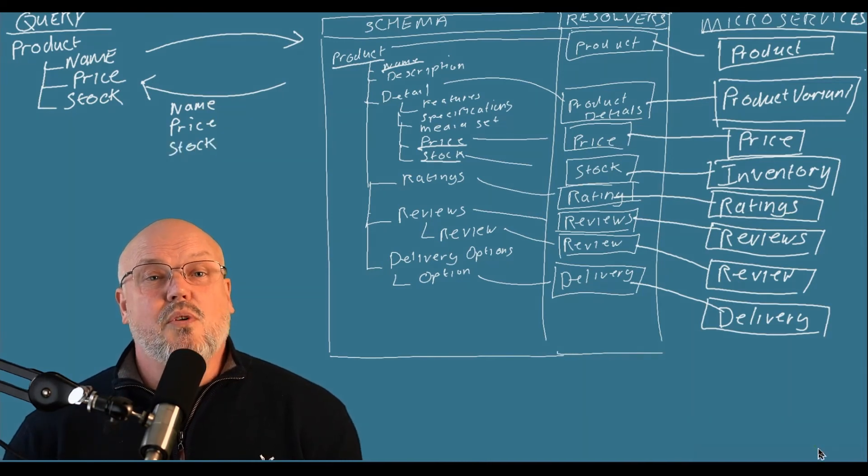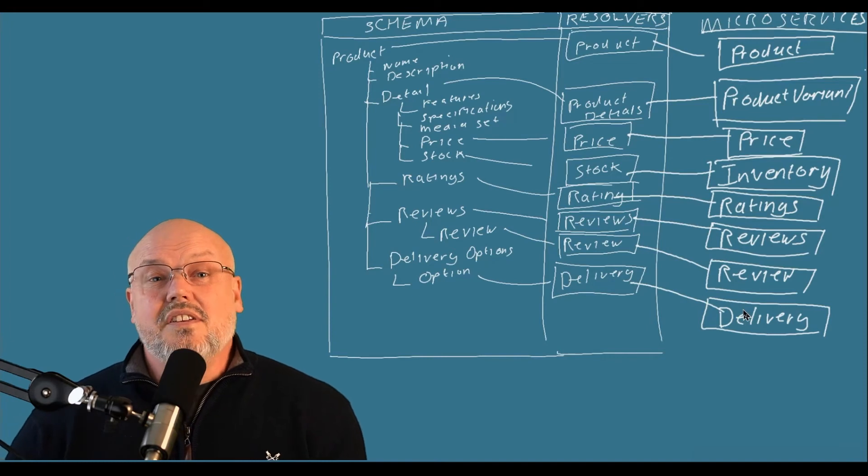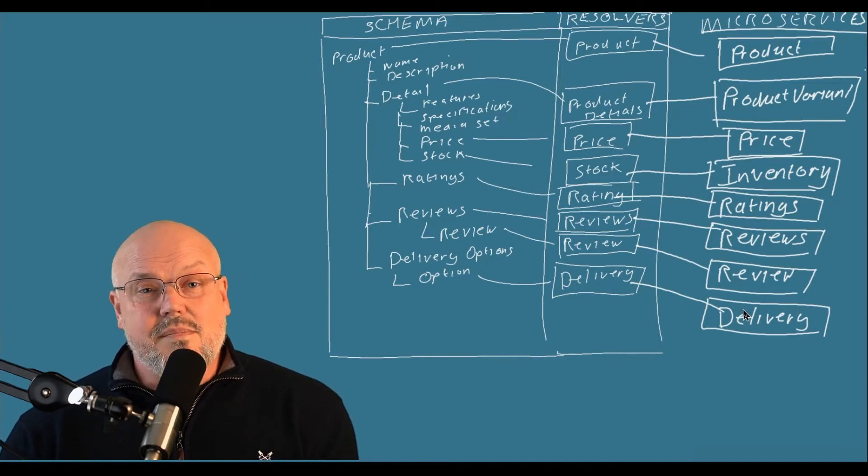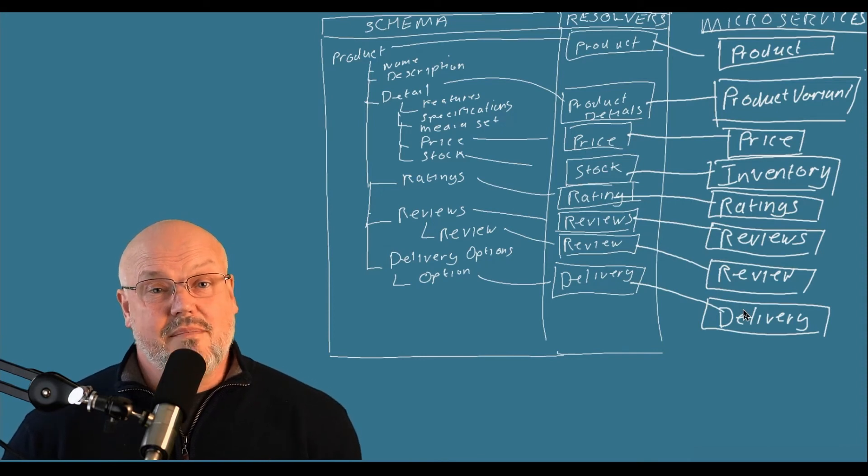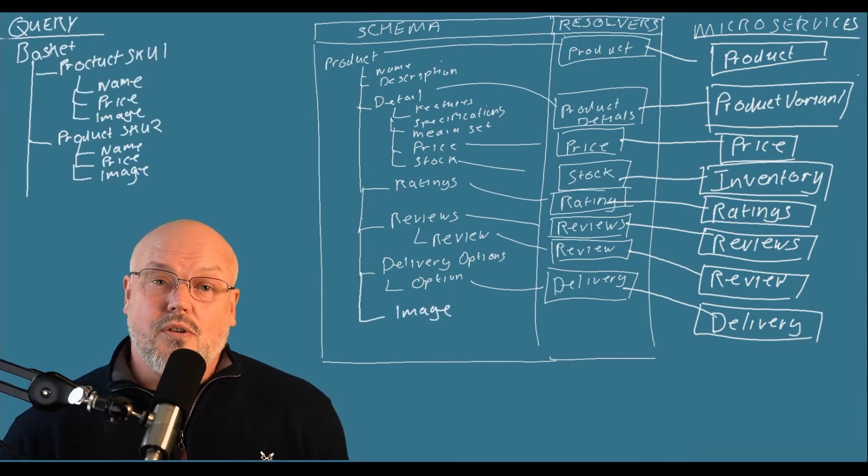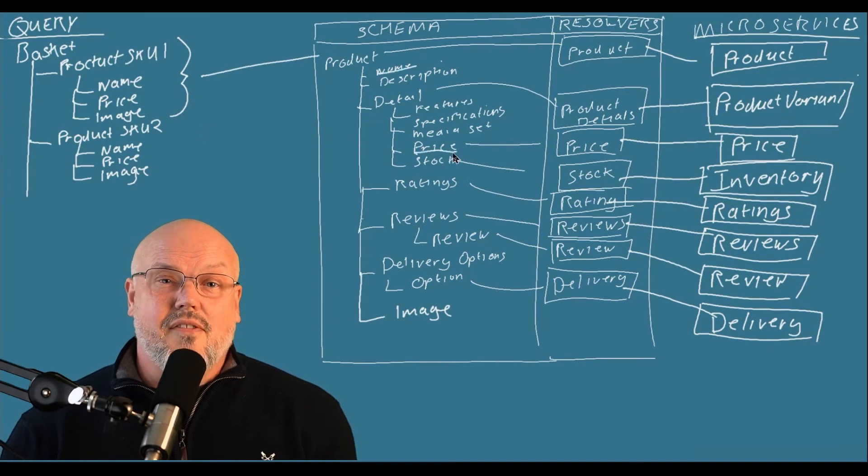For instance, you could ask for a product and state that you only want its name, its description, its price, and its image. Queries also allow you to ask many questions at the same time. For instance, you could ask for all the products in a basket, asking for only the name, the price, and the thumbnail.